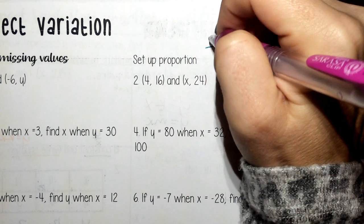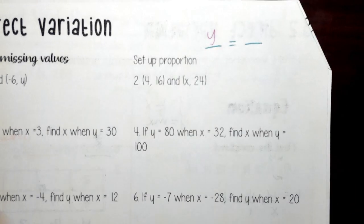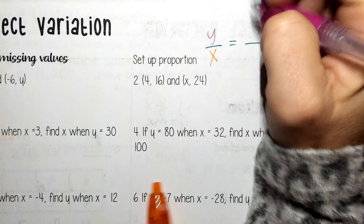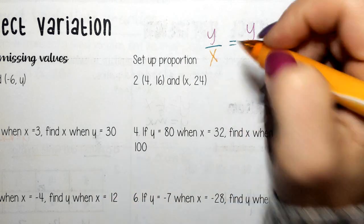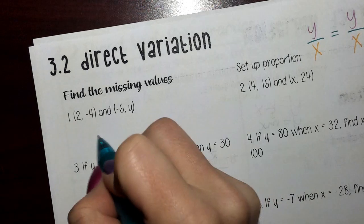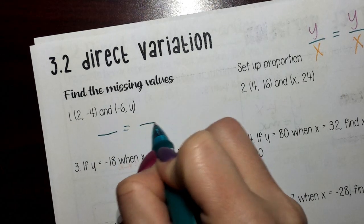And we're always going to put y over x equals y over x. So for each of these problems, we should first draw our proportion out.